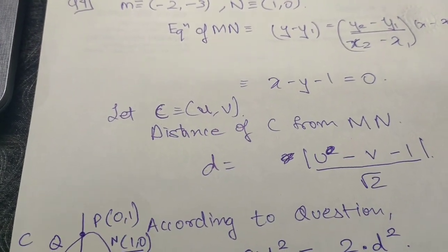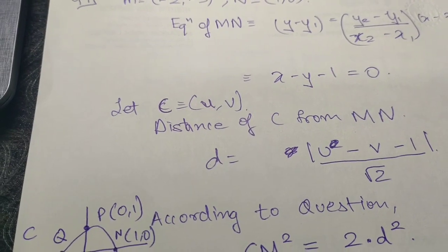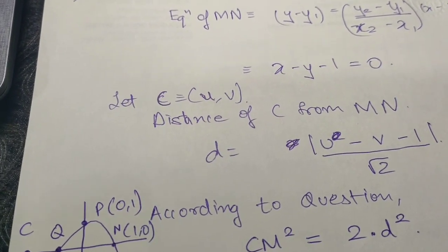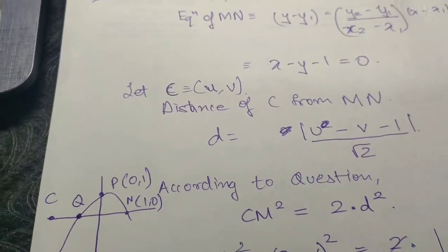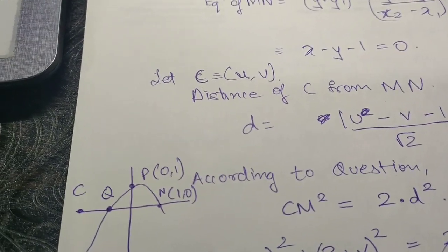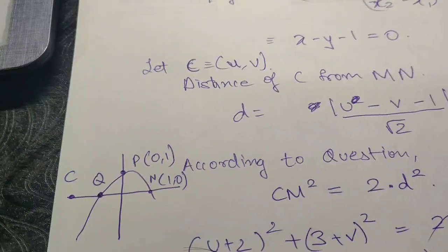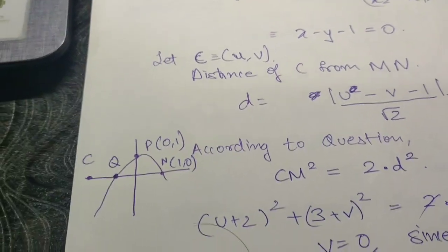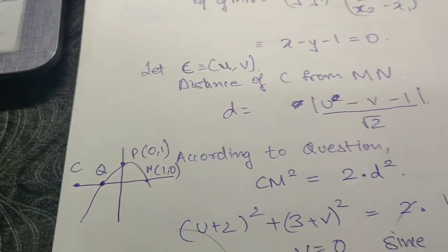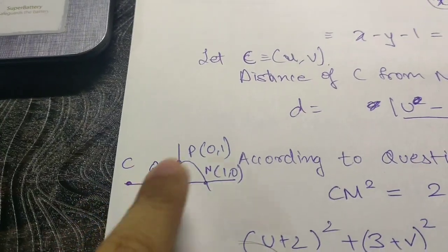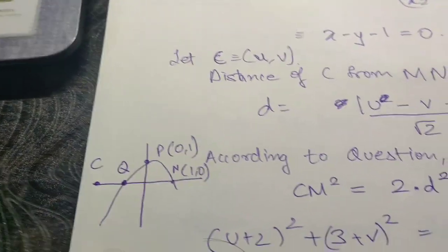It's given in the question that the position of the detector is such that the square of magnitude of CM is two times the square of perpendicular distance of point C from line MN. So the square of magnitude of CM is two times the distance of C from line MN.